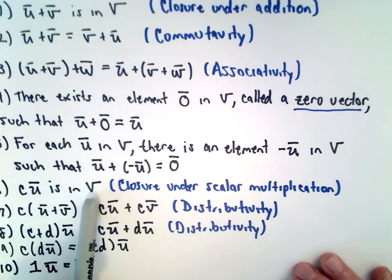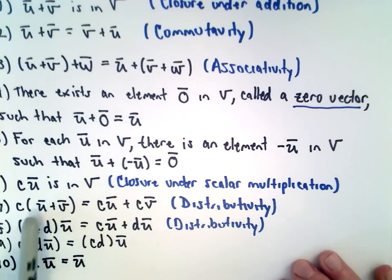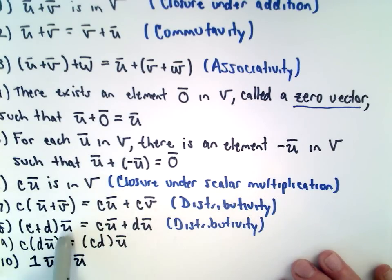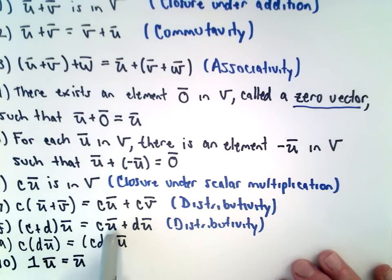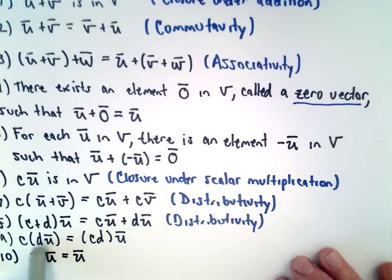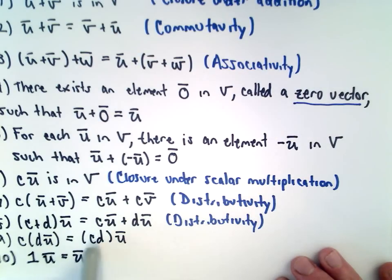C multiplied by U is also in V. This is closure under scalar multiplication. We have C multiplied by the quantity U plus V. That's going to give us C multiplied by U plus C multiplied by V. We've got C plus D multiplied by U. That equals C multiplied by U plus D multiplied by U. If we take C and multiply that by the quantity D multiplied by U, we get the same thing as if we first multiply C and D and then multiply by U.